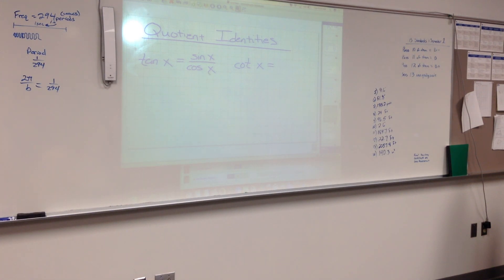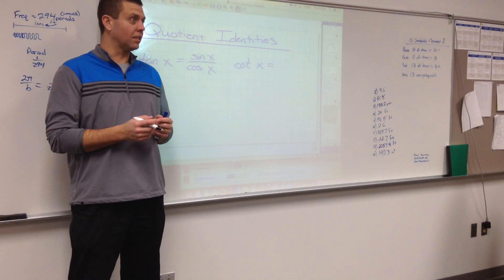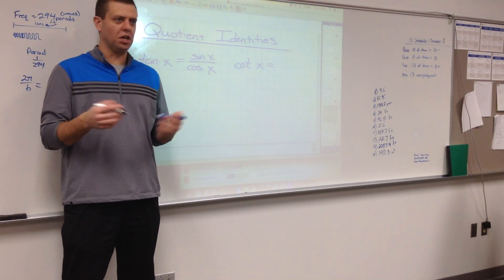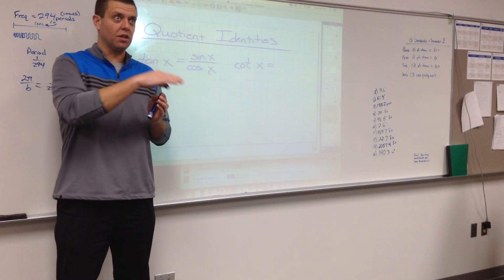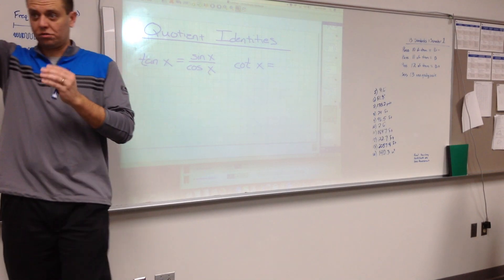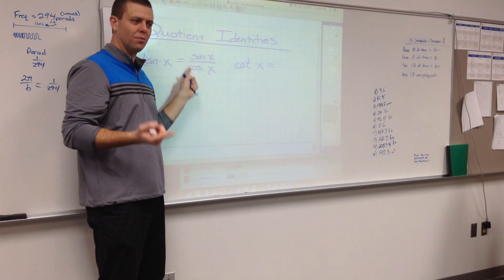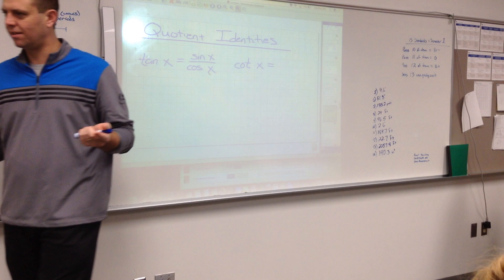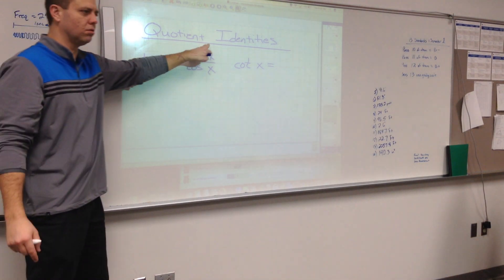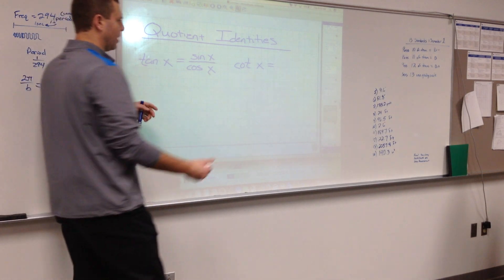That's because tangent is y divided by x, sine is equal to y, and cosine is equal to x. When you think of tangent — like tangent of 90 degrees, tangent of π/2 — you think y over x. The trig function that equals y is sine, and the trig function that equals x is cosine. So tangent is really equal to sine over cosine. And cotangent would be cosine over sine, because they're reciprocals of each other.